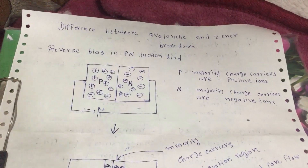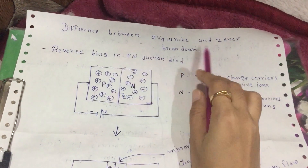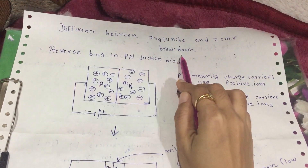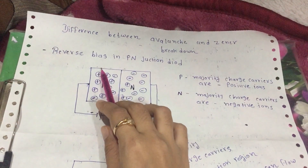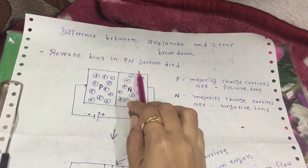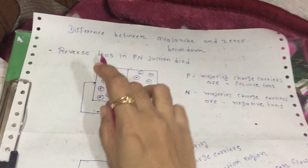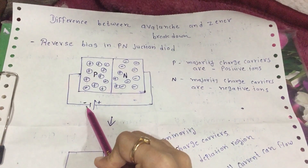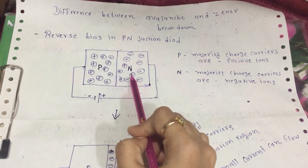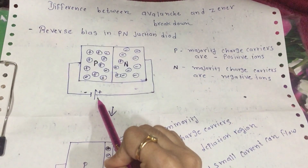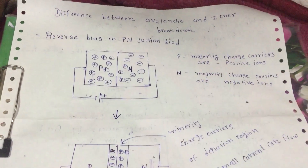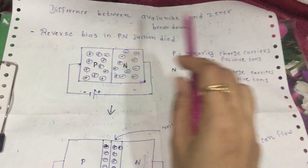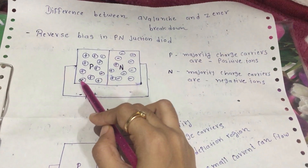Today we are going to learn the difference between avalanche and zener breakdown. Before we start, we have to revise reverse bias, because this breakdown only occurs in reverse bias. In reverse bias, the P-type is connected with the negative terminal of the battery and the N-type is connected to the positive terminal.